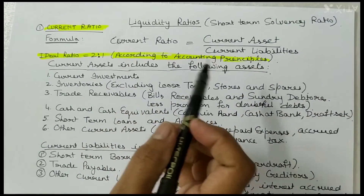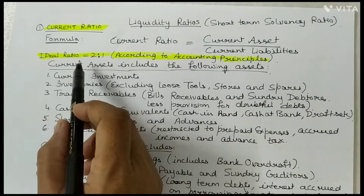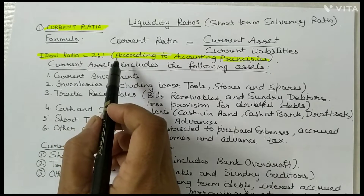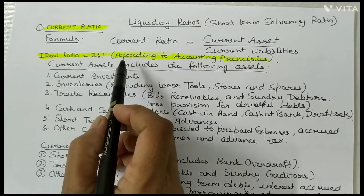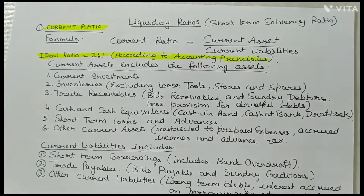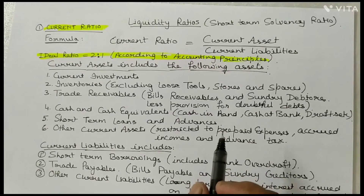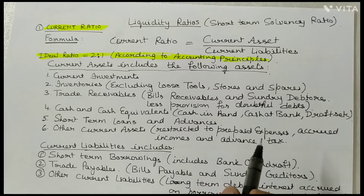The ideal Current Ratio, according to Accounting Principles, is 2:1. This means that Current Assets of a business should be at least twice the Current Liabilities. Higher the ratio, better it is, because the firm will be able to pay its Current Liabilities more easily.